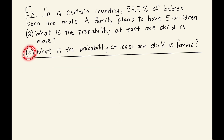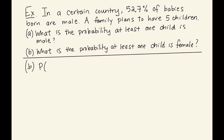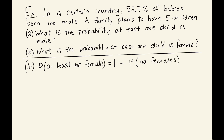Now let's do part B: what is the probability of at least one child being female? We follow the same approach. The probability of at least one female equals one minus the probability of no females, because the event of at least one female — that's one, two, three, four, or five females — is the complement of zero females. So we use the complement rule again.